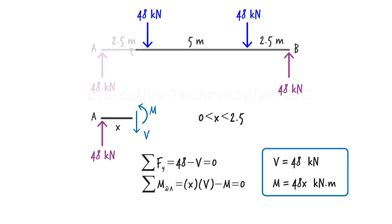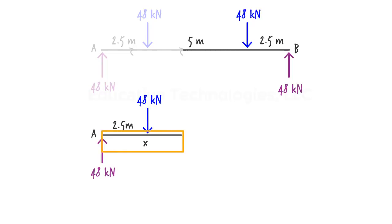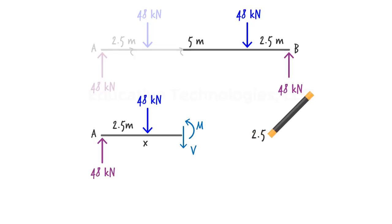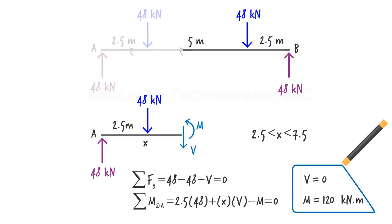Now we write a similar set of equations for the beam's middle segment. We cut the beam at some arbitrary distance from the origin and label the length x. Writing the equilibrium equations and solving them for v and m, we find that throughout the middle segment, shear is 0 while bending moment remains constant.